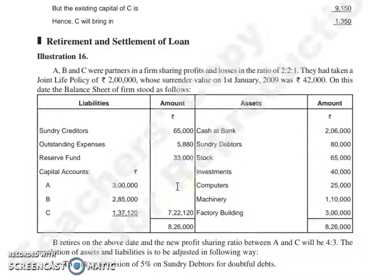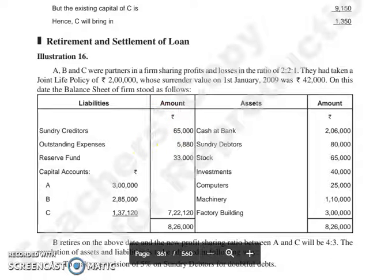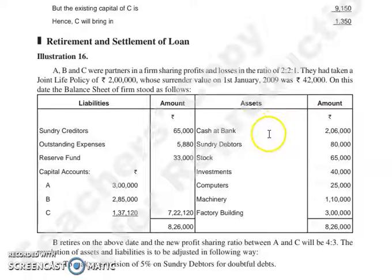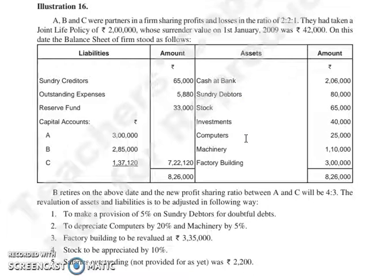We have a full-fledged question. A, B and C were partners in a firm sharing profit and losses in the ratio of 2:2:1. They had taken a joint life policy of 2 lakh rupees, whose surrender value on 1st January 2009 was 42,000. On this date, the balance sheet of the firm stood as follows.